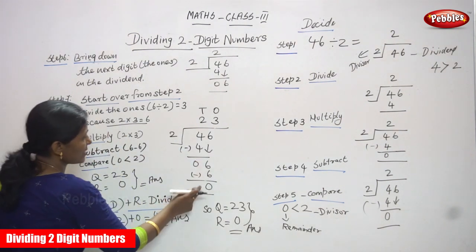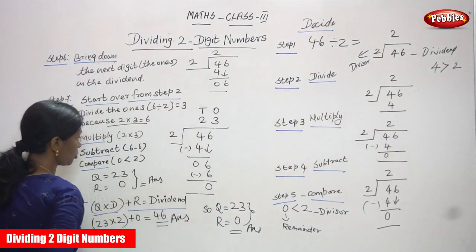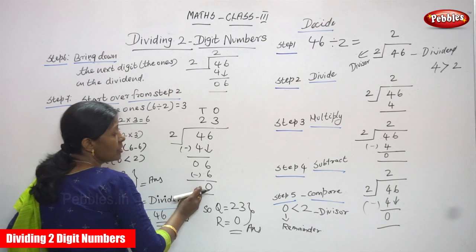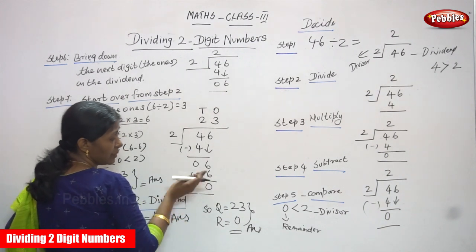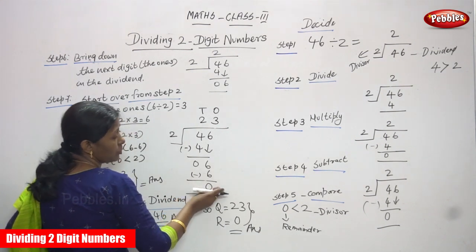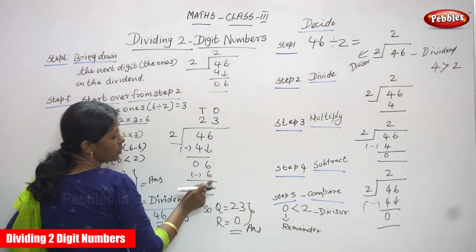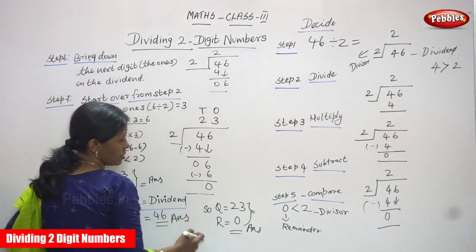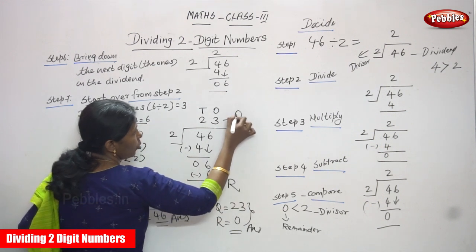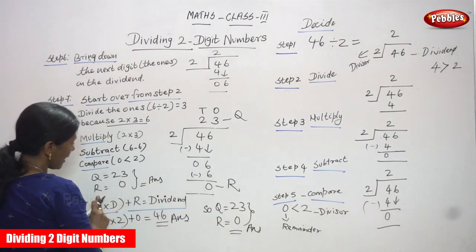So subtract: 6 minus 6 gives 0. Again, compare 0 and 2 — 0 is less than 2, so this is the remainder. After that, you don't have any more numbers in the dividend, so you stop the division. The quotient is 2 tens and 3 ones — that is 23. And the remainder is 0.